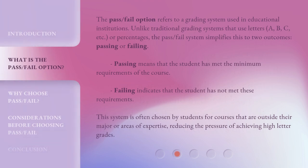The Pass-Fail Option refers to a grading system used in educational institutions. Unlike traditional grading systems that use letters A, B, C, etc., or percentages, the Pass-Fail System simplifies this to two outcomes: passing or failing. Passing means that the student has met the minimum requirements of the course. Failing indicates that the student has not met these requirements. This system is often chosen by students for courses that are outside their major areas of expertise, reducing the pressure of achieving high letter grades.